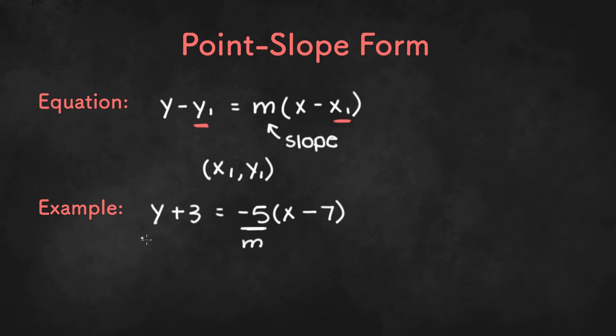And the coordinates would be x1, y1. So x1 is 7, and y1 is negative 3, since we're subtracting negative 3 to get the positive 3. So our coordinates would be (7, negative 3).